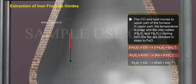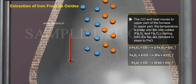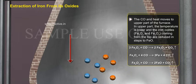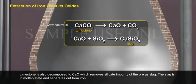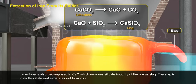In the upper part, the temperature is lower and the iron oxides, Fe₂O₃ and Fe₃O₄, coming from the top, are reduced in steps to FeO. Limestone is also decomposed to CO, which removes the silicate impurity of the ore as slag. The slag is in molten state and separates out from iron.